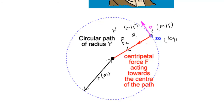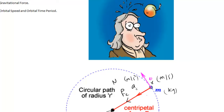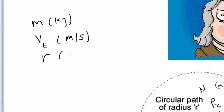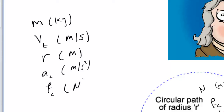So these are the physical quantities needed for calculating circular motion. First, the mass of the object in kilograms. Second, the velocity or tangential velocity, V or VT, in meters per second. Third, the radius in meters. Fourth, Ac, the centripetal acceleration, in meters per second squared. And fifth, the centripetal force Fc in newtons.